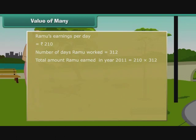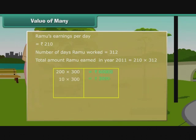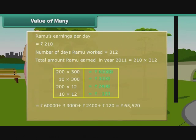Let us break the multiplication into 4 steps. First, we multiply 200 and 300. Then 10 and 300. Then 2 and 12. Then 10 and 12. Now we add up the products to get 65,520 rupees. Therefore, Ramu earned 65,520 rupees in year 2011.